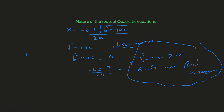Second: if b-squared minus 4ac is less than zero — that is, a negative number — and we put a negative number under the radical, let's consider negative b plus or minus the square root of negative 3, over 2a.